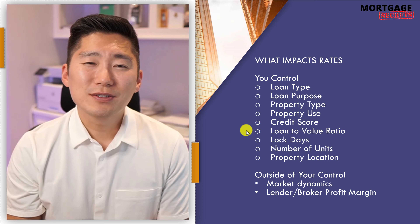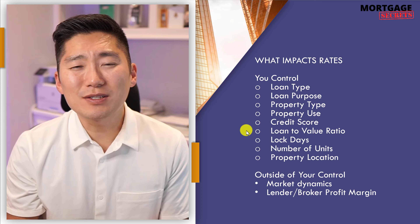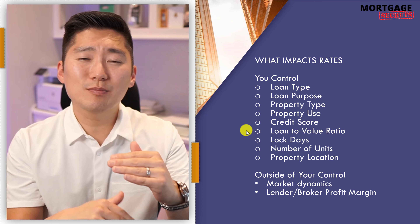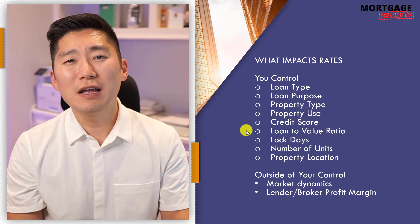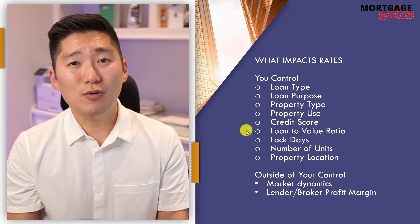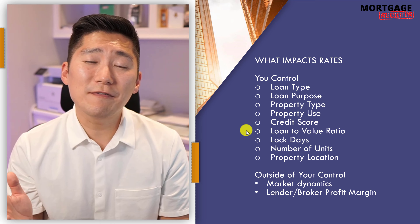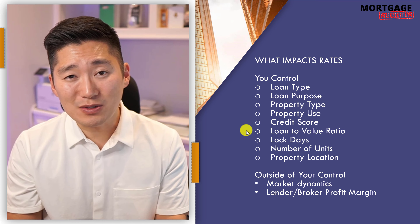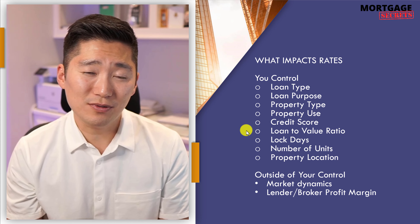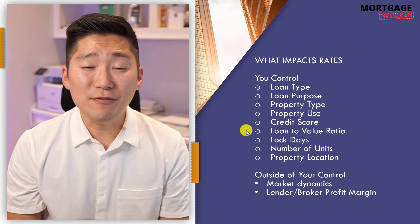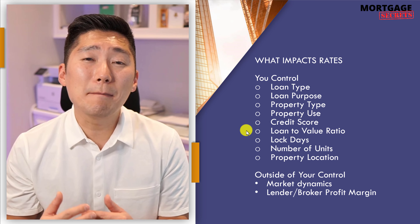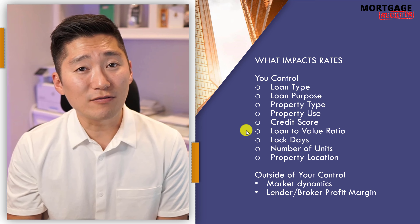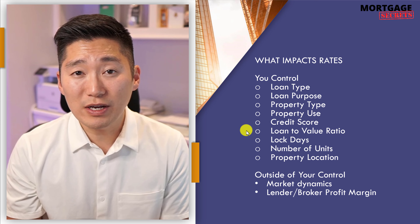Loan to value ratio is just math — it's a fraction: loan over the appraised value of your property, not the purchase price. For example, if you have a $500,000 loan for a $1 million home, that's a 50% loan-to-value ratio. If you have an $800,000 loan for a $1 million home, that's an 80% loan-to-value ratio. If you have a second mortgage, we look at the combined loan-to-value ratio, which will make a difference on rates.